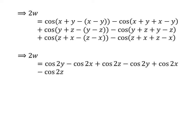Further simplification gives us 2w = cos(2y) - cos(2x) + cos(2z) - cos(2y) + cos(2x) - cos(2z).